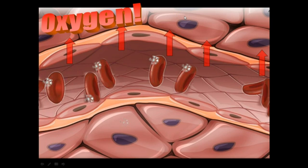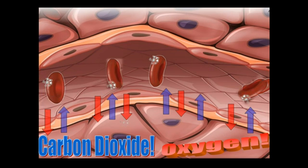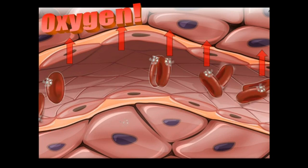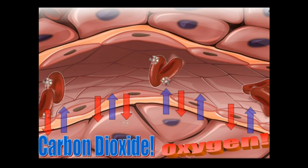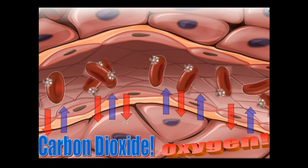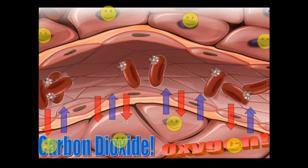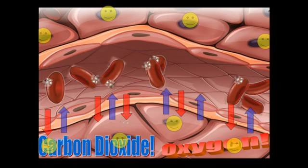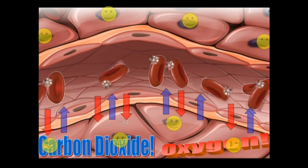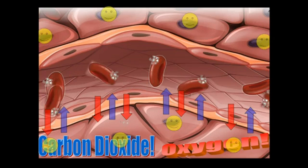Oxygen is diffusing out of the blood and into the cells; carbon dioxide is diffusing out of the cells and into the blood. As that happens, we get happy cells — cells that have their carbon dioxide taken away and receive oxygen through the blood. This has been a vodcast for honors biology at Desert Ridge High School. I hope you have a great day.